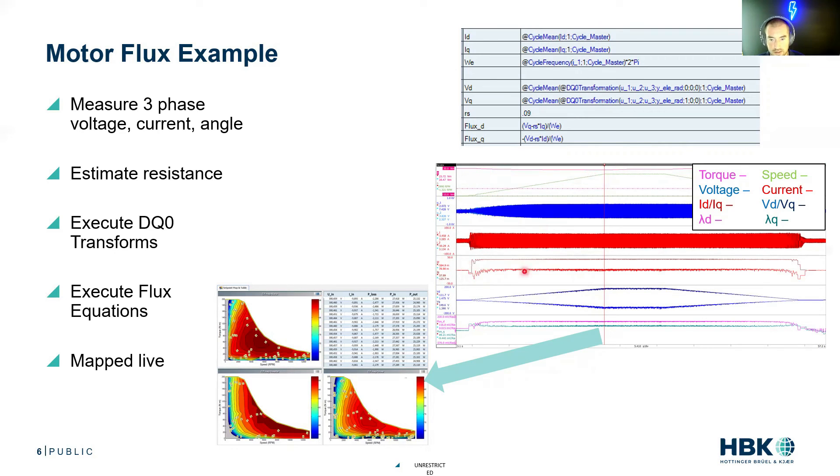We can see that torque's pretty constant. Q axis and D axis current are pretty constant. Our speed is changing. So our D and Q axis voltages are changing in amplitude. And then our D and Q axis fluxes are displayed out just like a scope trace.